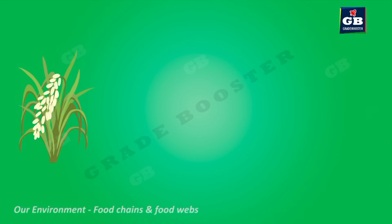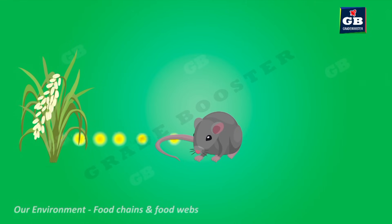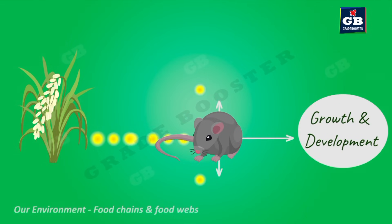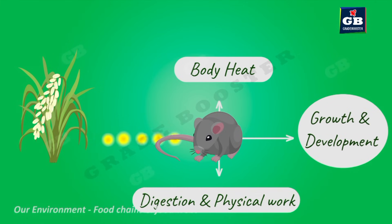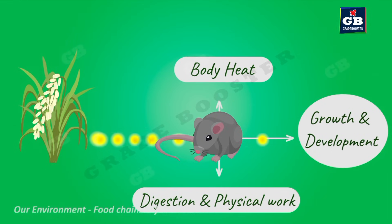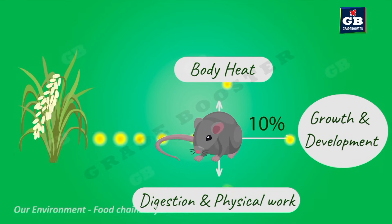The energy in the plant flows into the body of the animal that eats it. The animal cannot use all that energy to build its body, because most of the energy is released as body heat. Some energy is used for digestion and other physical activities. Only the remaining energy is converted into body mass. On average, only 10% of the energy obtained from food is useful for body growth and development.